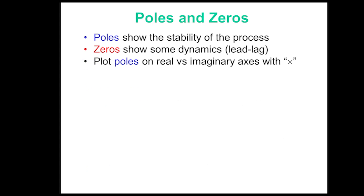So let's talk a little bit about poles and zeros. Poles show the stability of the process and also show whether it's going to be oscillating or smooth. Zeros show some dynamics, and zeros can also be used to predict something called an inverse response. What we do is we typically plot poles on the real versus imaginary axis with an X, and zeros are plotted with an O on that axis.